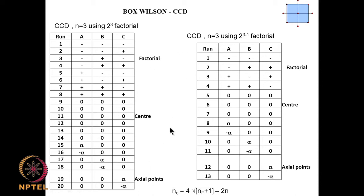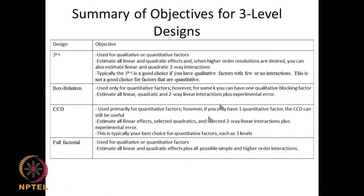We have looked at different types of 3-level designs, also called non-linear designs. The 3^(k−q) design (similar to 2^(n−q)) can be used for qualitative or quantitative factors, and we can estimate linear and quadratic effects, as well as linear and quadratic interactions — for example A² or A×B terms in regression. The Box-Behnken design can be used for quantitative factors, for linear, quadratic, and two-way linear interactions.